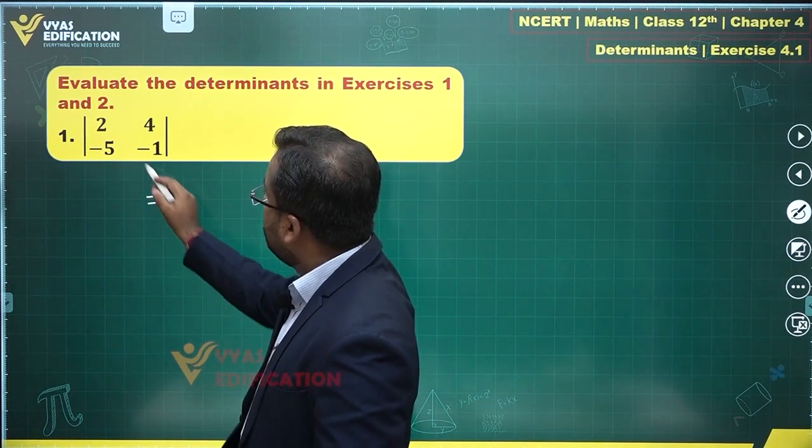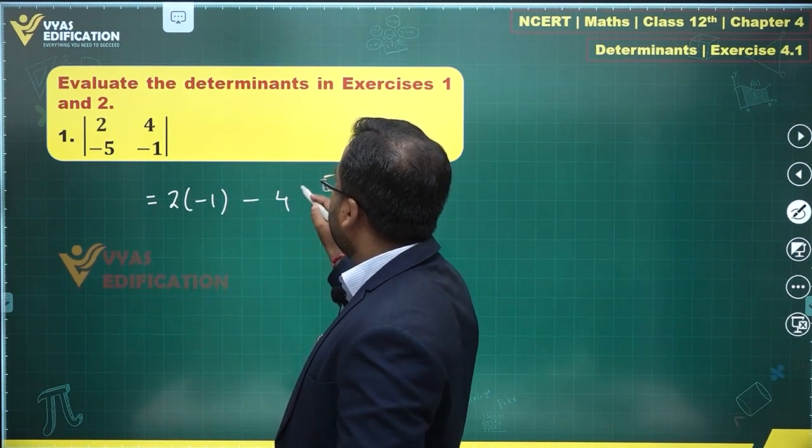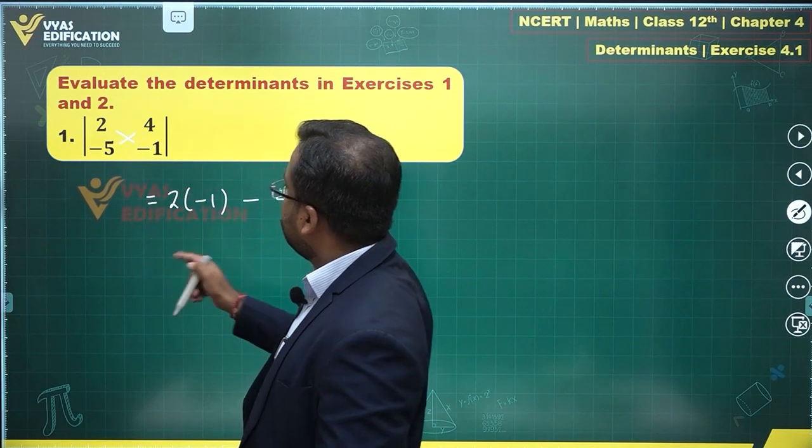So the value would be simply equal to you cross multiply this 2 times minus 1 minus 4 times minus 5. This is what you have. Multiply these 2 and then you multiply these 2 and subtract them.